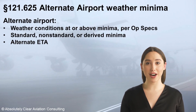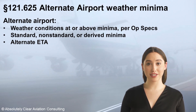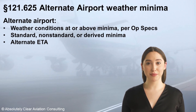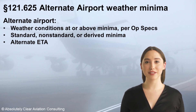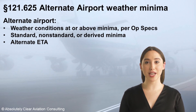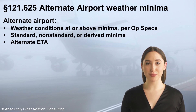That concludes this lesson on FAA Part 121 alternate airport weather minima. In summary, any airport specified as an alternate airport must meet certain minimum weather conditions at the time the aircraft would arrive at that airport following a diversion from the planned destination airport. Typically, this subject will be addressed in the air carrier's ops specs. If authorized in the ops specs by paragraph C-55, alternate weather minimums may be derived using a formula. If derived alternate weather minimums are not authorized, then standard or non-standard alternate weather minimums apply. Derived alternate weather minimums usually yield lower minimums than standard.